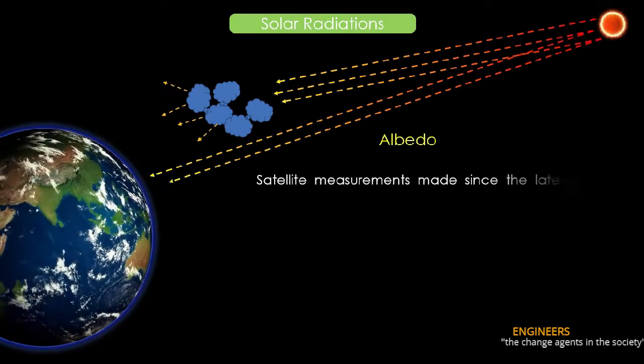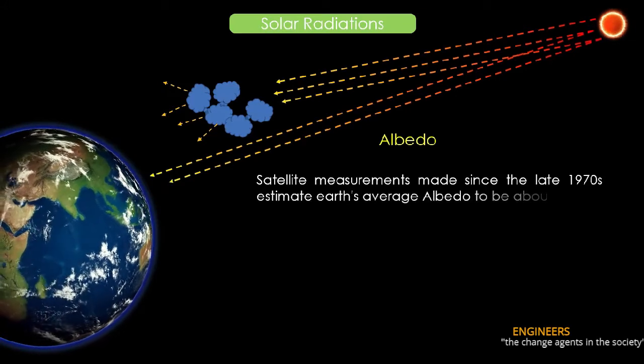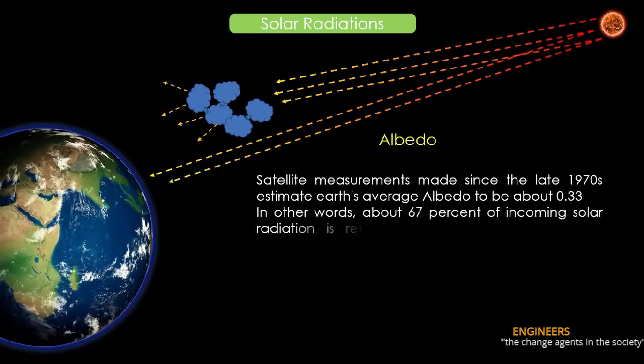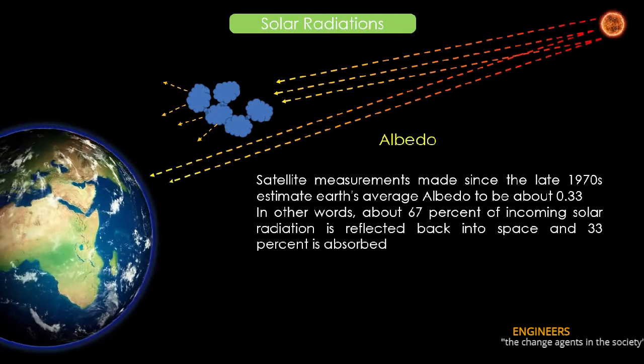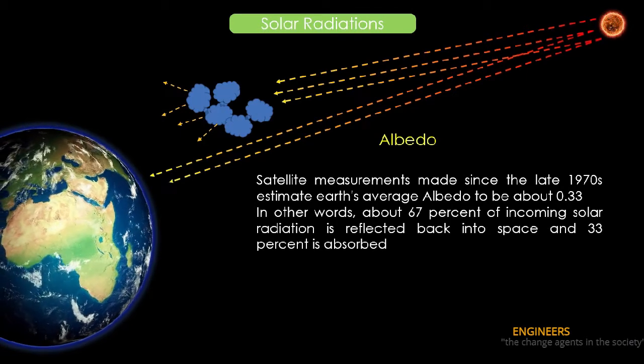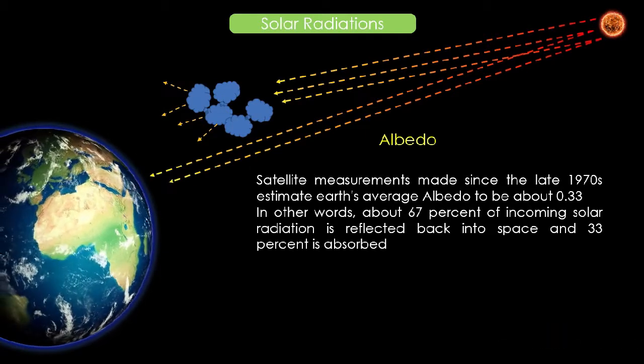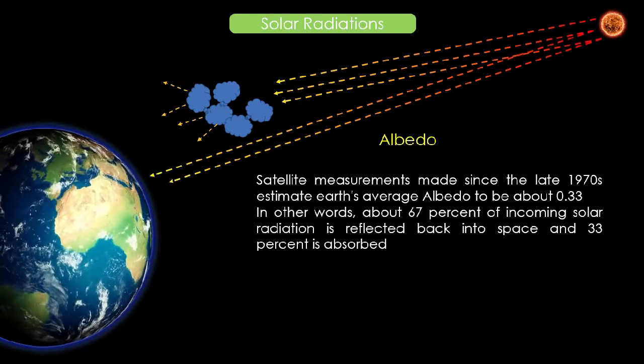Satellite measurements made since the late 1970s estimate Earth's average albedo to be about 0.33. In other words, about 67 percent of incoming solar radiation is reflected back into space and 33 percent is absorbed.